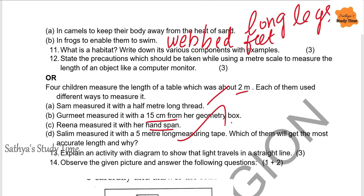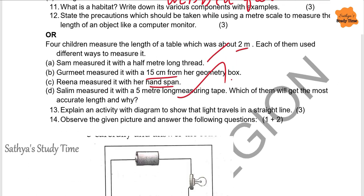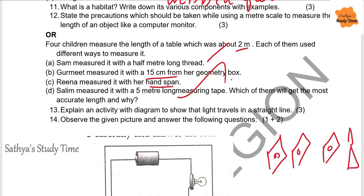Explain an activity with a diagram to show that light travels in a straight line. Place three or four cardboards in a line, each with a hole aligned straight. Light a candle on one end. When you look through the holes in a straight line, you can see the candle. If you shift one cardboard out of alignment, you cannot see the light — proving that light travels in a straight line.